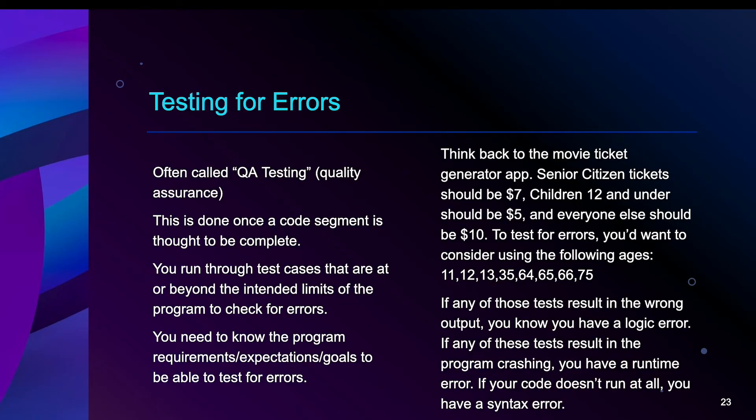So those of you that have used code.org, when we are covering, I think this was early on when we were looking at if-else statements, there was that movie ticket generator app where we had senior citizen tickets, child tickets, and then just regular tickets. I didn't want to make it that complicated. This still serves as a good example. Basically, if ticket prices are the same every day based on age, senior citizen should be $7, children 12 and under should be $5, and everyone else should be $10.